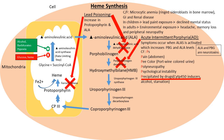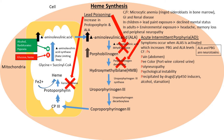AIP is often precipitated by drugs that induce cytochrome P450 enzyme. The liver produces a fraction of heme to fuel the cytochrome P450 system. When drugs stimulate P450, the liver requires more heme, so the body stimulates ALA synthase to increase heme production. This raises ALA levels, which raises PBG levels. Since porphobilinogen deaminase is deficient, ALA and PBG continue to rise, leading to the symptoms described.